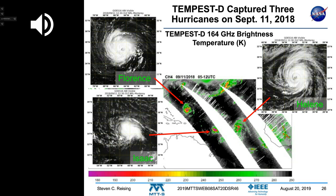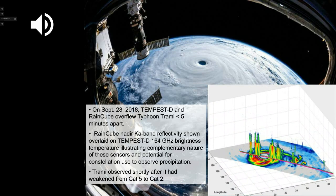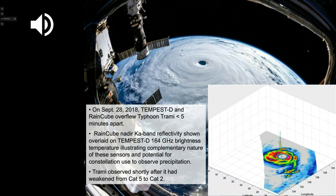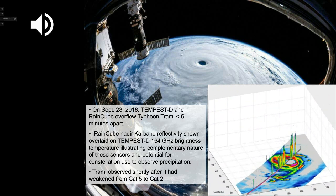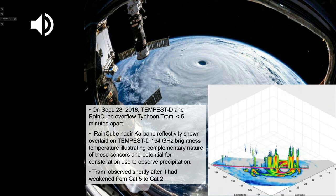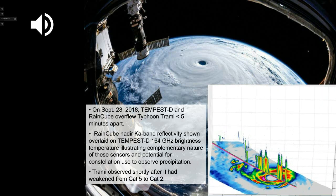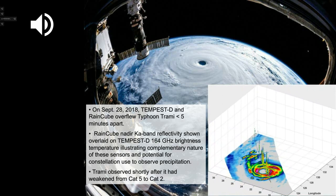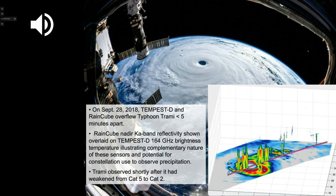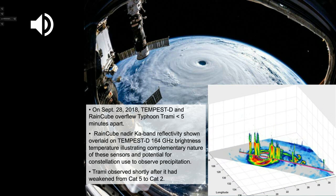17 days later, we had a coincident overpass with another 6U CubeSat — RainCube — over Typhoon Trami in the Pacific Ocean. RainCube is a Ka-band radar on a satellite, giving a vertical slice. Tempest D and RainCube measured the typhoon together simultaneously.